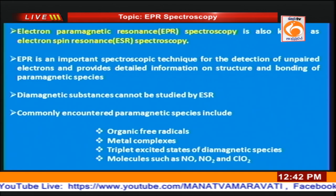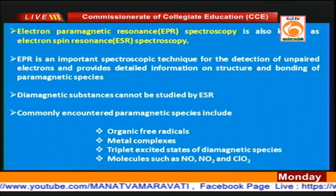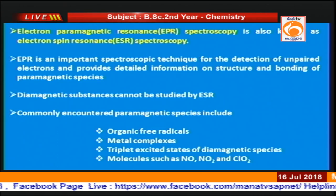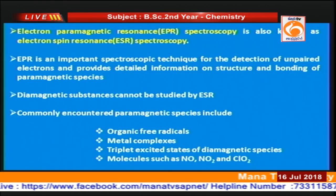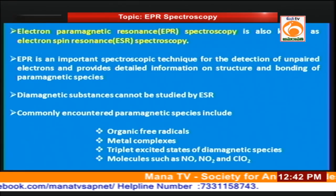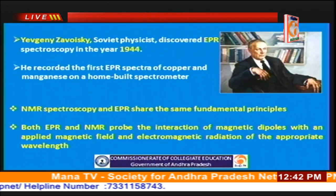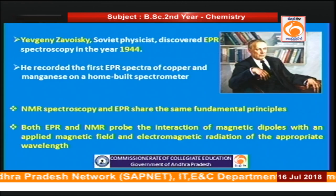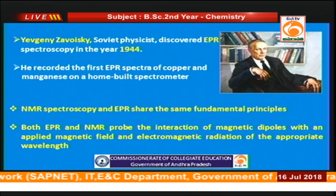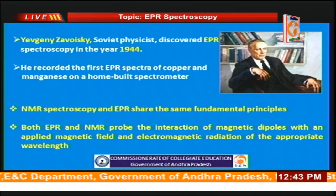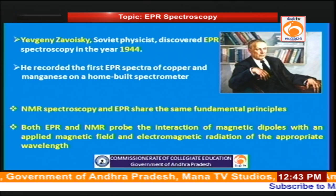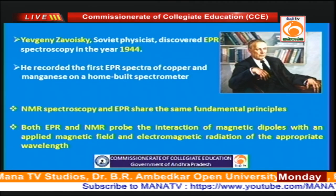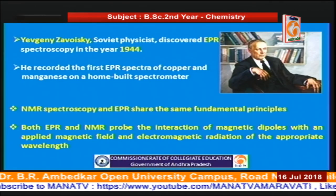The commonly encountered paramagnetic species include organic free radicals, metal complexes, triplet states of diamagnetic species, and some molecules like NO, NO₂, and ClO₂. EPR was discovered by Jaworski, a Soviet physicist, in the year 1944. He recorded the first EPR spectrum of copper and manganese complexes using a home-built spectrometer.